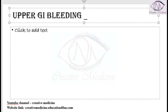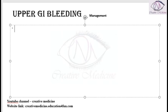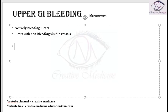What is the management of upper GI bleeding? Whenever the patient has active bleeding ulcers, or if the patient has ulcers with non-bleeding but viable vessels, endoscopic therapy is recommended.